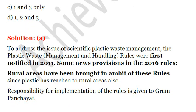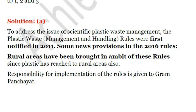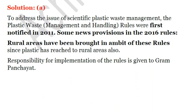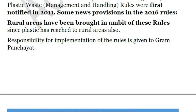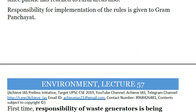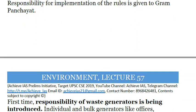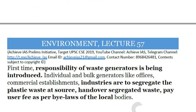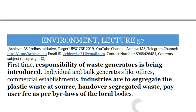Here is the explanation. The plastic waste management rules were first notified in 2011, and some new provisions were added in the 2016 rules — like rural areas being brought into the ambit of these rules since plastic has now reached rural areas also. The responsibility for implementation is given to gram panchayats as well as to waste generators — for example, industries, individuals, bulk generators, and commercial establishments — who have to segregate plastic waste at source and hand over the segregated waste and pay user fee as per the bylaws of local bodies.